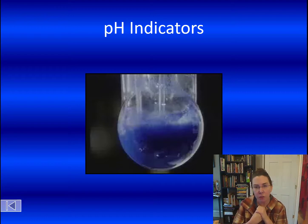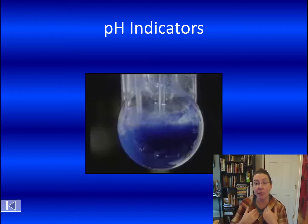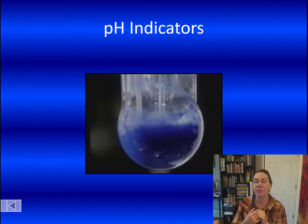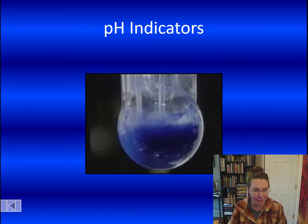Most of the common indicators we'll be using in Regents chemistry are found on Table M in your reference table, and we'll be looking at that a little bit later.